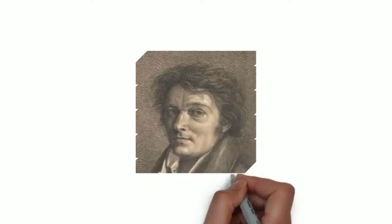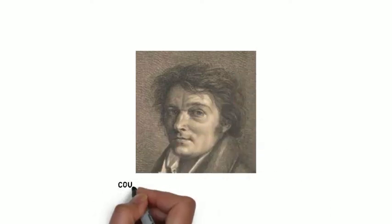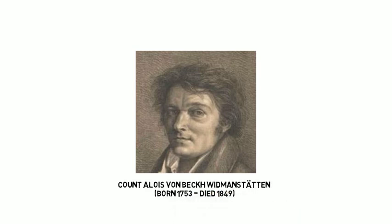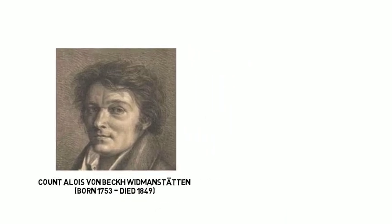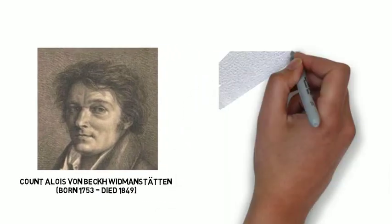In 1808, the Austrian printer and scientist Count Alois von Beck-Widmonstaten, born 1753, died 1849, provided evidence that iron has a meteoric origin.